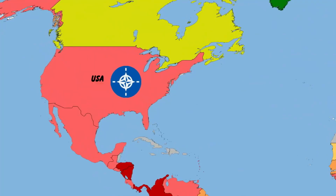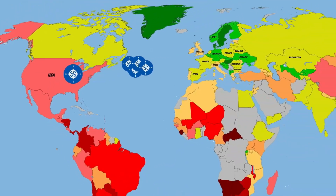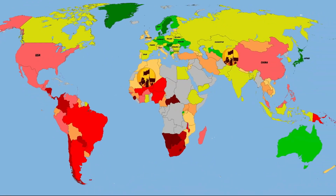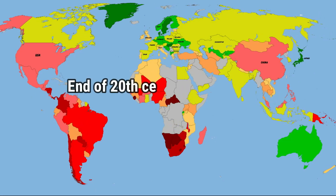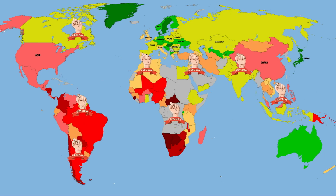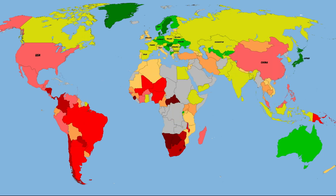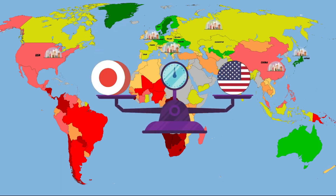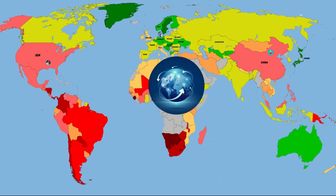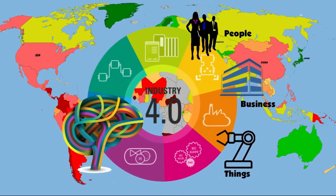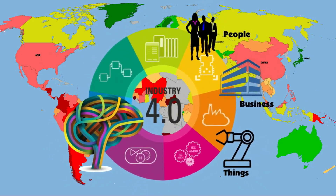NATO continued to exist, expanded, and became ready to intervene in areas beyond the borders of member countries. During the Cold War, national liberation movements in colonial countries grew stronger and spread worldwide. By the end of the 20th century and into the 21st century, the majority of countries gained independence. The rise of China, Japan, and Western European countries created new economic centers to counterbalance the U.S. The scientific and technological revolution accelerated the globalization process, increasing the need for international cooperation.